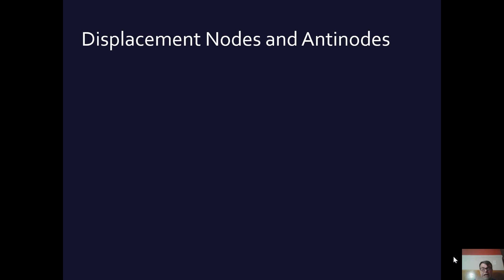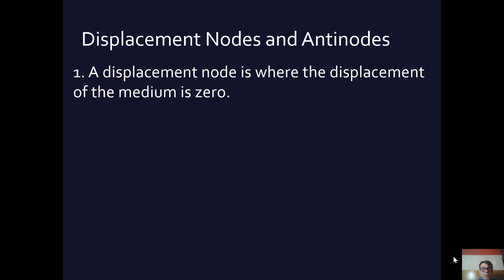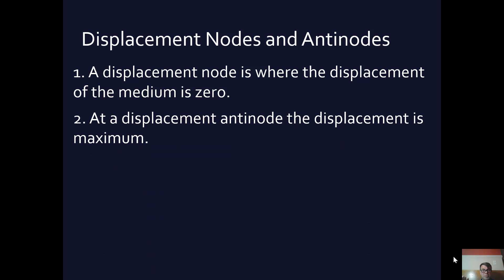Let's talk about displacement nodes and antinodes in relation to sound. A displacement node is where the displacement of the medium is zero — node equals zero. A displacement antinode is where the displacement is at maximum amplitude. A displacement node is where there is zero displacement of the particular medium.